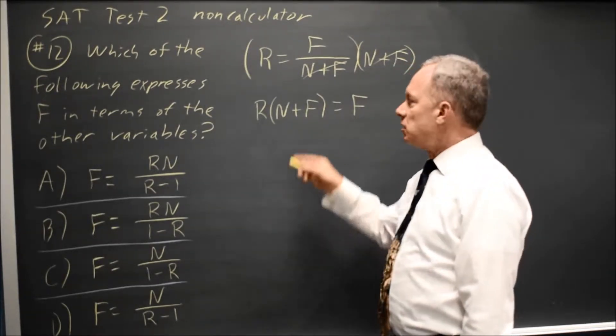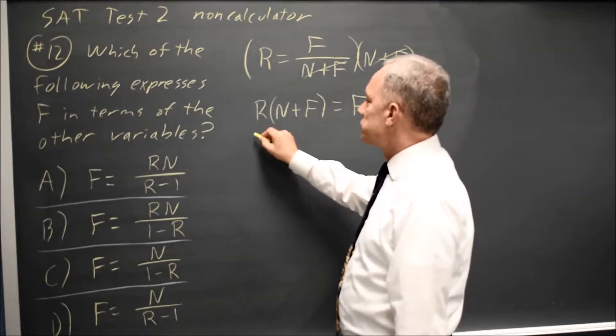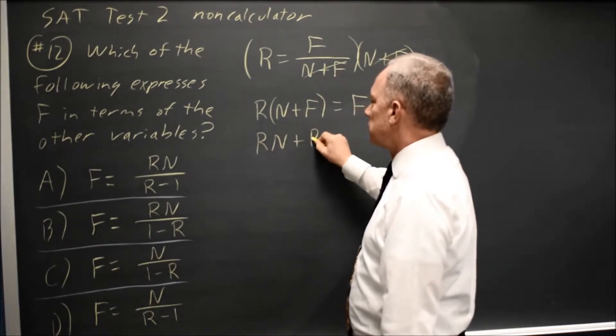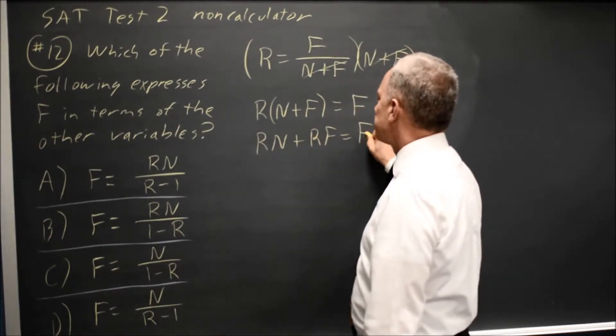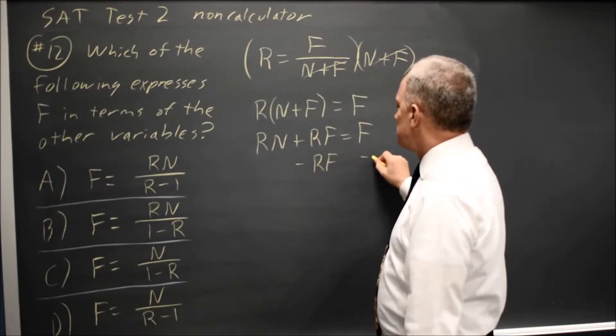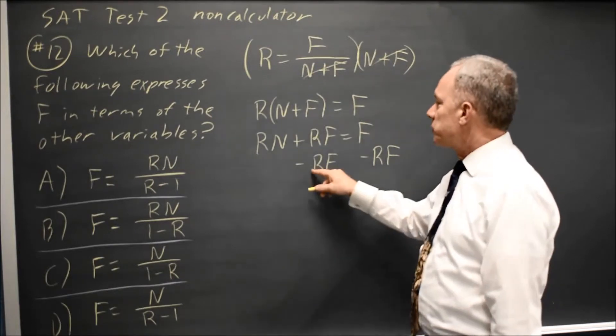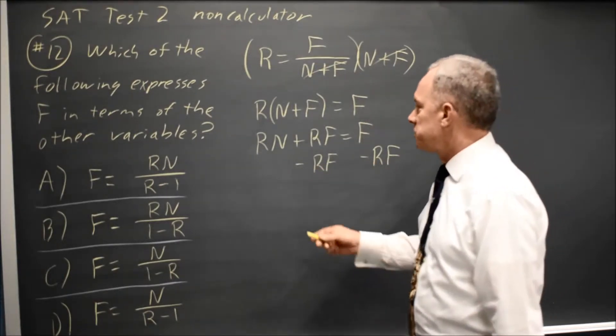I need to get all the f's on the right and then get them by themselves, so I'm going to distribute rn plus rf equals f, and now I move the f term from the left to the right by subtracting rf from both sides. Again, I'm doing the same thing to both sides of my equation.